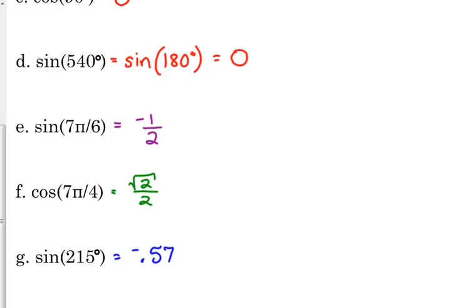Negative 0.57. I always go to three places after the decimal. So if it's not on your unit circle, then you've just got to type it into the calculator.